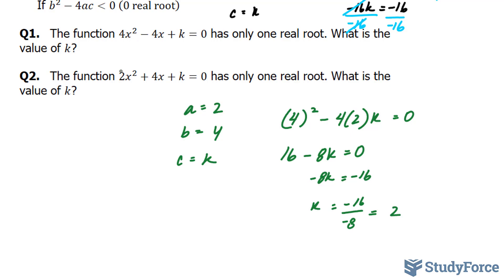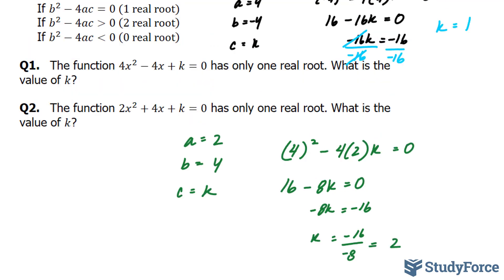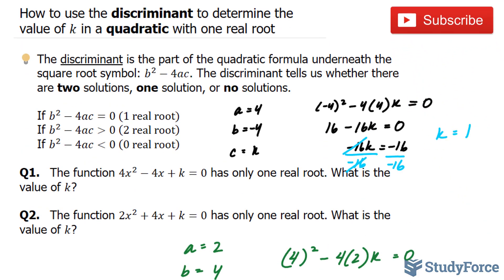So in order for there to be one real root for this quadratic, k must equal 2. And there you have it - that's how to use the discriminant to determine the value of k in a quadratic with one real root.